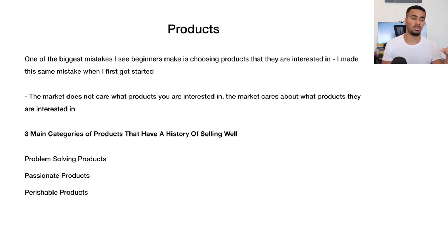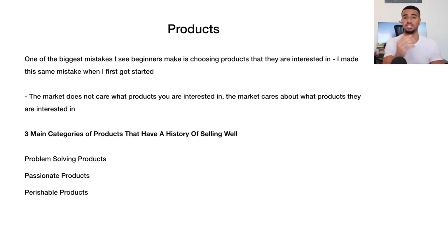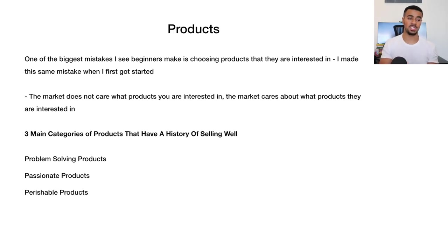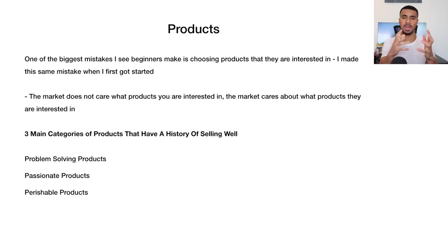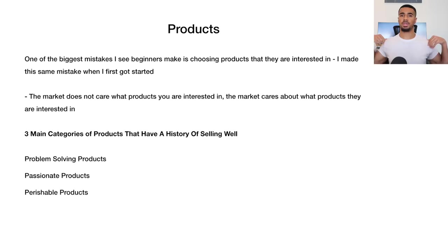In my time in the e-commerce space I've found there are three main categories of products that have a history of selling well. I determined these by researching the best-performing products of the last few years and up to date. The first category is problem-solving products. An example is the posture corrector device — you put it on and it helps keep your posture straight, your chest out, and your shoulders back. That product did extremely well.